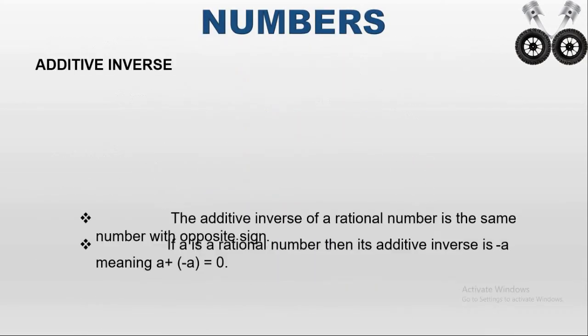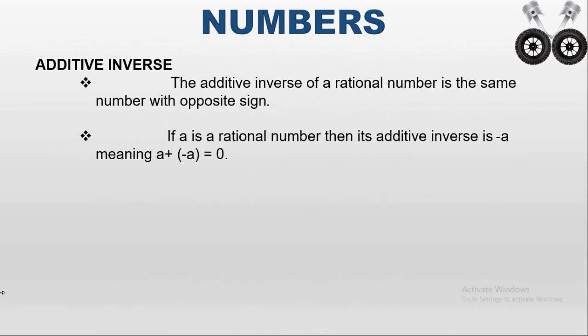Next is the additive inverse. To write the additive inverse of a rational number, just write the number with the opposite sign. If A is a positive rational number, the additive inverse is −A. Whenever we add a rational number and its additive inverse, we always get 0.